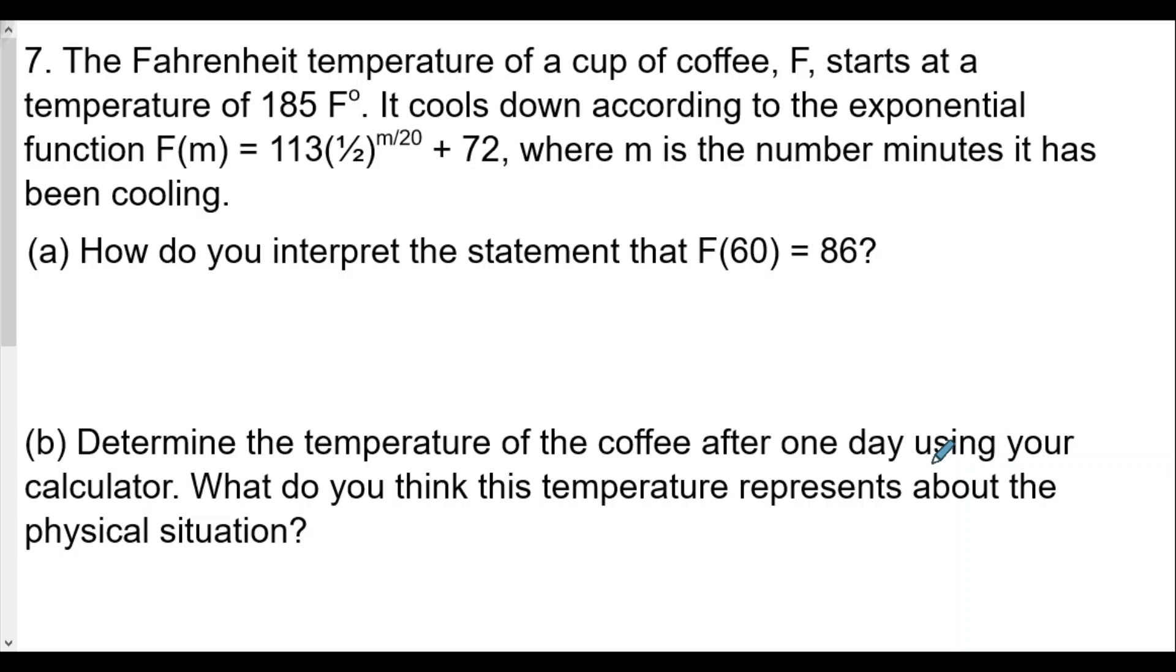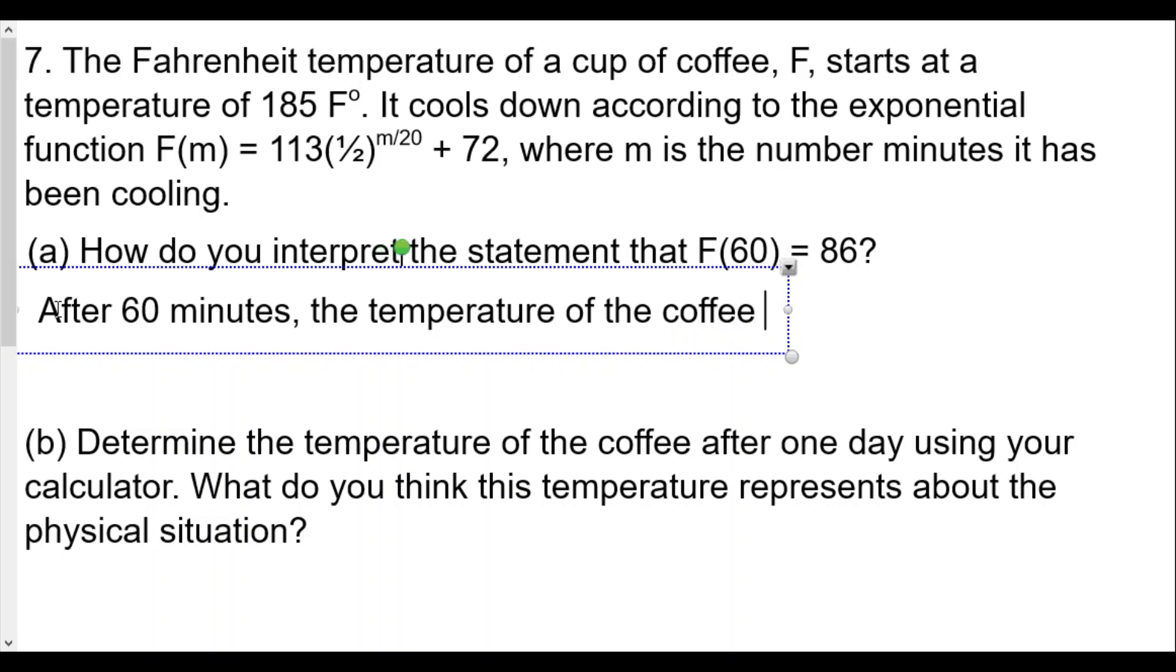Part (a) says how do you interpret the statement F(60) = 86? We'll interpret that with the following: since we're plugging in 60, the 60 is the number of minutes. So after 60 minutes, the temperature of the coffee will be 86 degrees Fahrenheit.